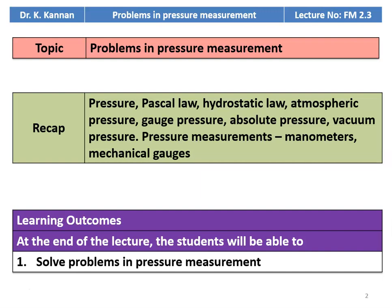We are going to solve problems in pressure measurement. In the earlier two lectures, we discussed the theory part of pressure measurement: Pascal's law, hydrostatic law. We defined atmospheric pressure, gauge pressure, absolute pressure, vacuum pressure, and we discussed the theory part of various pressure measuring instruments like manometers and mechanical gauges. Remember the learning outcome: at the end of the lecture, the student will be able to solve problems in pressure measurement.